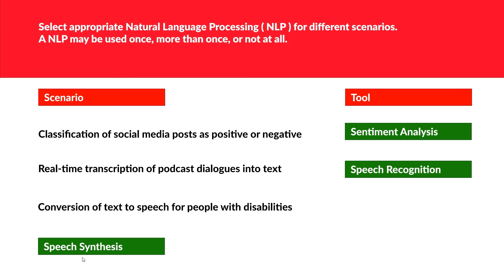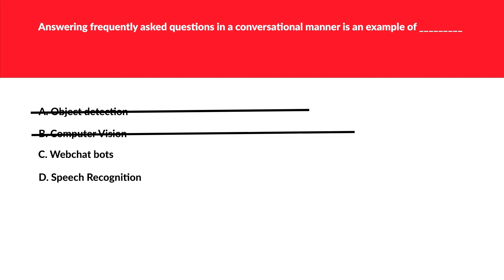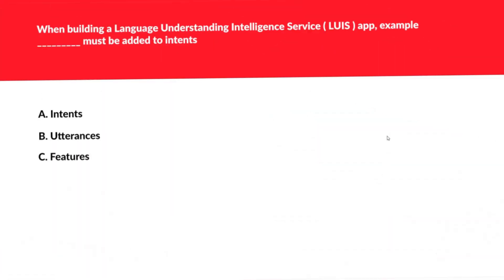The next question is related to conversation. Object detection is definitely not related to conversation — it's a distractor. Computer vision is also wrong for conversation, even though it can detect brands. Web chatbot does conversation for frequently asked questions — this looks correct. Speech recognition cannot do conversation on its own. So we are left with web chatbot, which is the correct option.